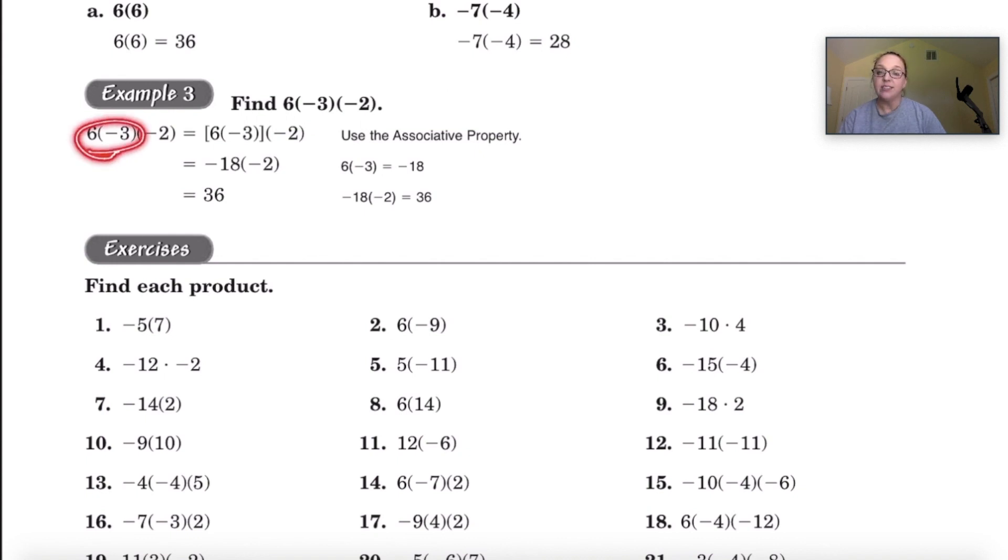First you're going to do the 6 times negative 3. Since they have different signs the answer would be negative, so that's where this negative 18 comes from, and then they're bringing down the negative 2. Now we're doing negative 18 times negative 2. They have the same sign so their answer would be positive, so the final answer was positive 36.